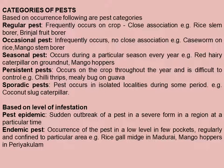Third, seasonal pests — they occur during a particular season every year, like red hairy caterpillar on groundnut and mango hoppers. Fourth, persistent pests — they occur on the crop throughout the year and are difficult to control because they always remain on the crop, causing a lot of damage. Fifth, sporadic pests — which occur in isolated localities during some periods, for example the coconut slug caterpillar; at some time they may occur in a particular area.